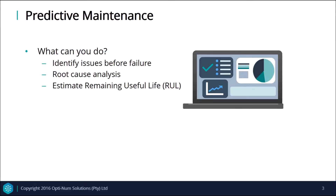So what can you do with predictive maintenance? The main aim is to predict and identify issues before failure. But you don't just want to predict that a failure is going to occur and when — you also need to know what part is going to fail, so that you can save time and effort by maintaining or replacing only that part. Using machine learning you can perform root cause analysis to pinpoint the part in your plant which is failing. You can also use machine learning and time-to-failure information to estimate the remaining useful life of your equipment.